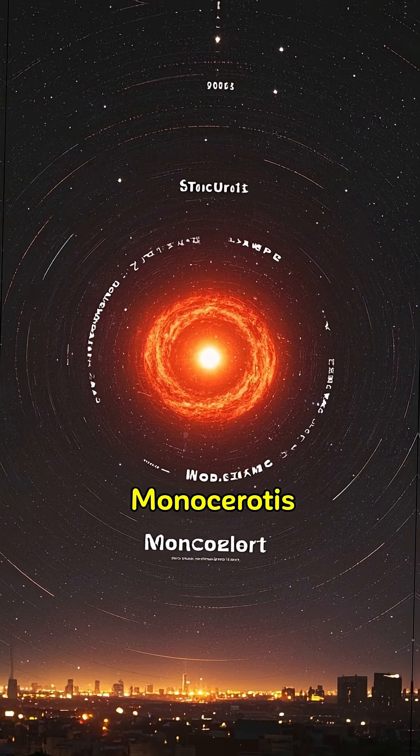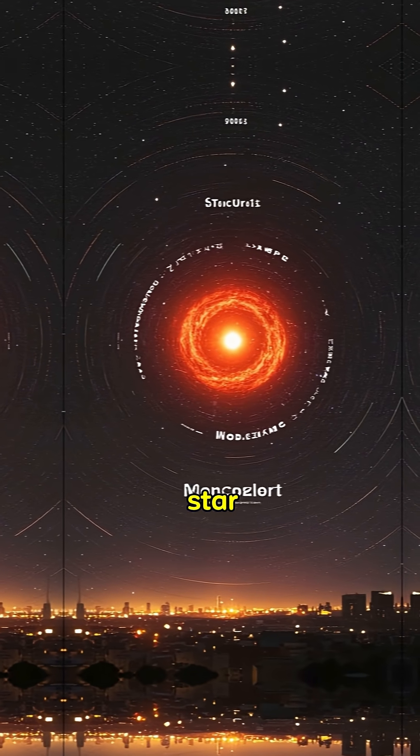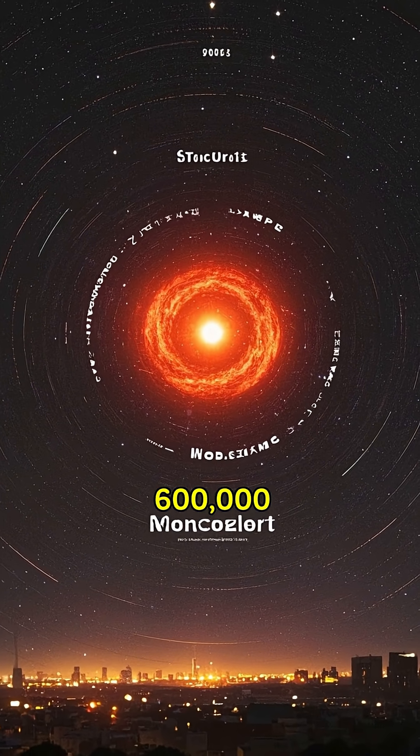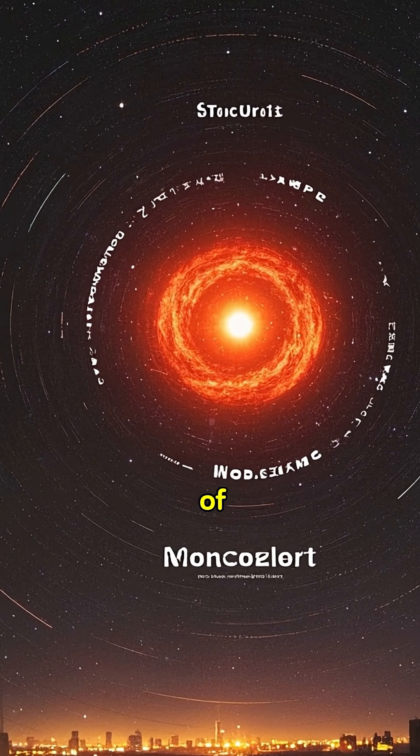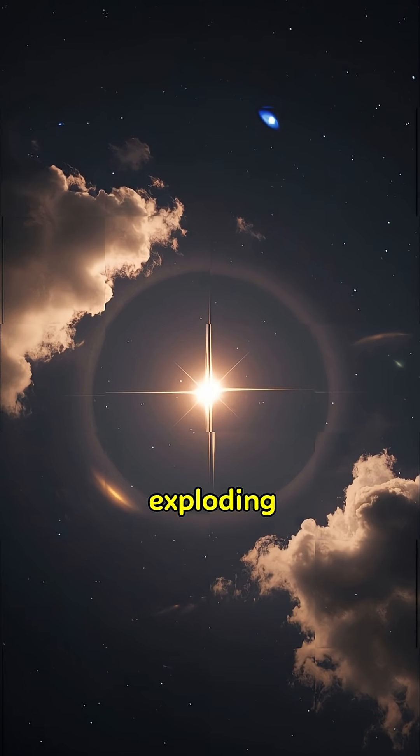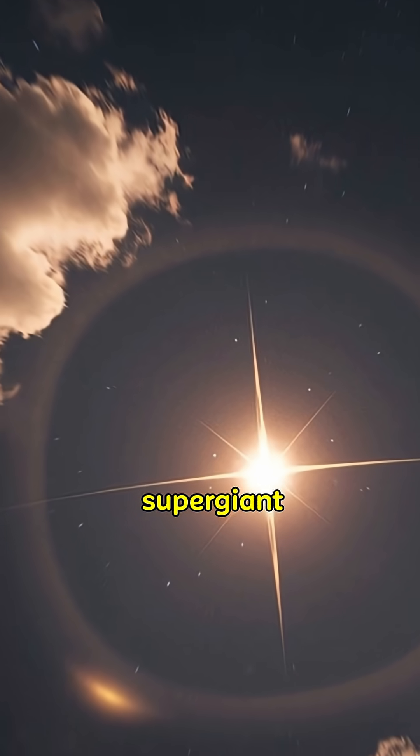V838 Monoceratis, a previously unremarkable star, suddenly brightened to nearly 600,000 times the luminosity of our sun. But instead of exploding, it expanded into a cool supergiant,